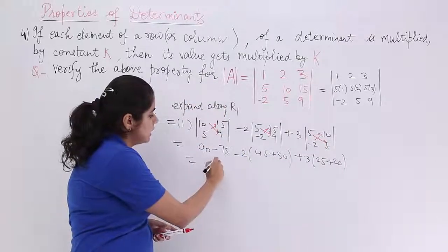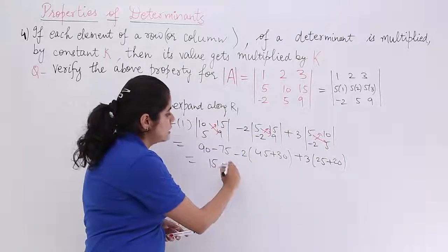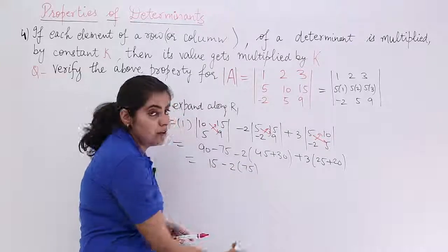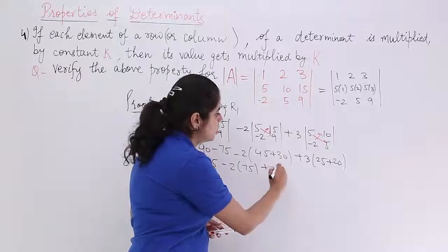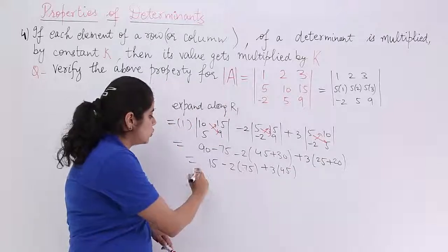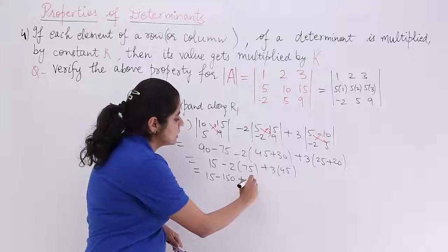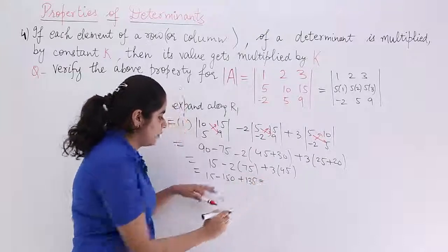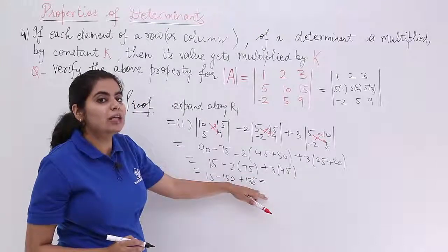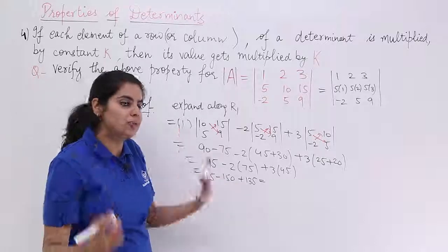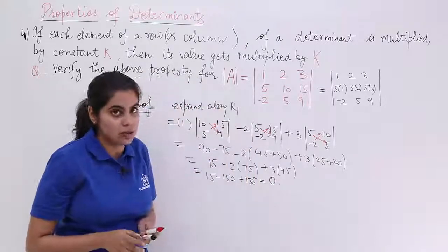Now what is the answer? It is 15 here. It is minus 2 into 75 here. It is plus 3 into 45 here. You have 15 minus 150 plus 135. 15 plus 135 is 150, 150 minus 150 is 0. So the answer has come out to be 0.